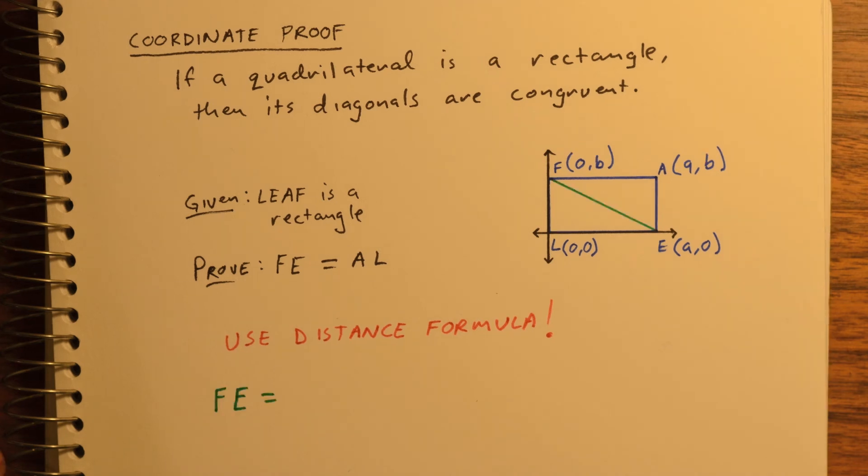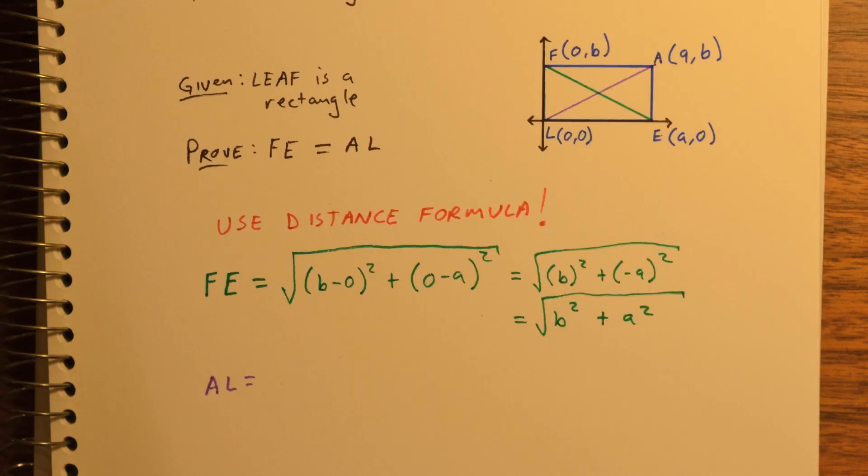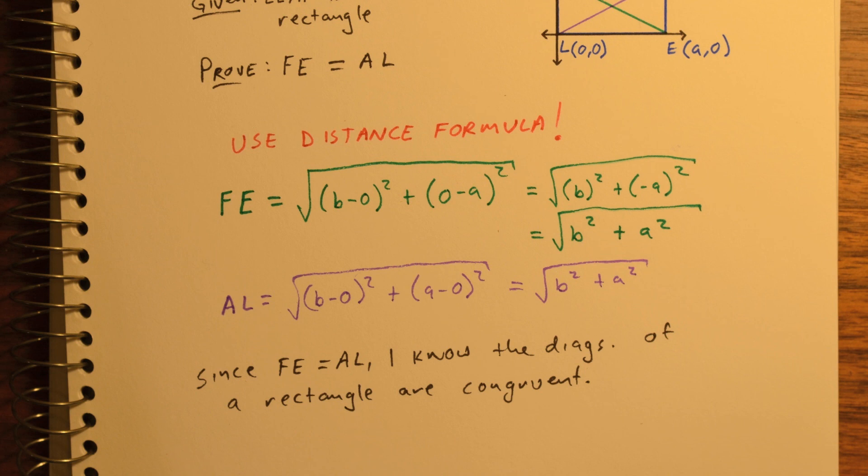The distance from F to E is going to be B minus 0 squared plus 0 minus A squared, which is B squared plus negative A squared, all square rooted. And remember, negative A squared is just positive A squared. The other diagonal, AL, is also equal to B squared plus A squared, all square rooted. And so, therefore, since those distances are equal, I know for sure that the diagonals of any rectangle will be congruent.